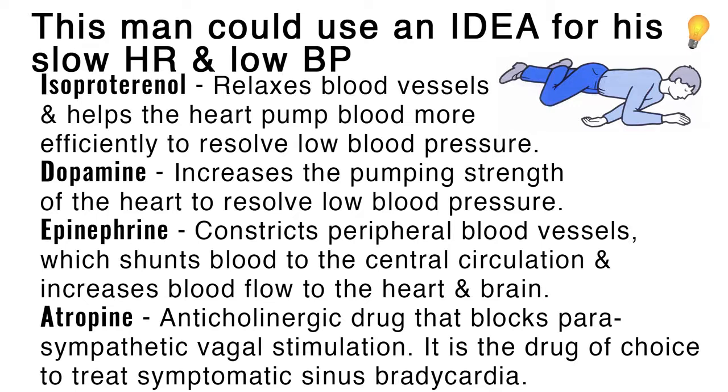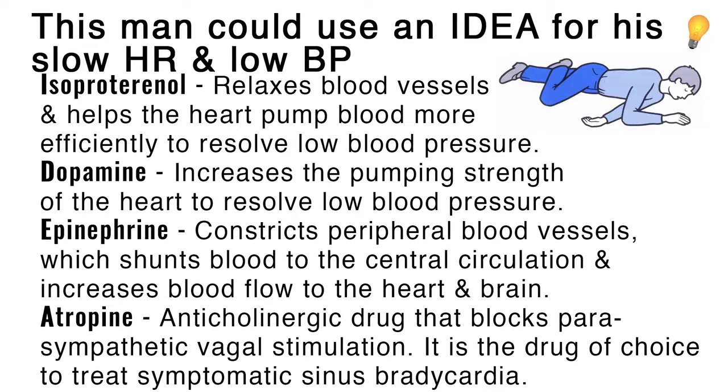Our third mnemonic involves drugs that are used to treat a slow heart rate and low blood pressure. This man could use an idea for his slow heart rate and low blood pressure: Isoproterenol, Dopamine, Epinephrine, and Atropine.